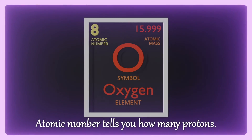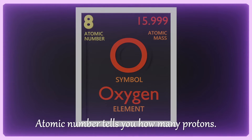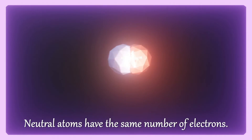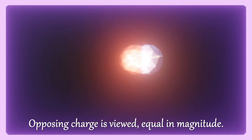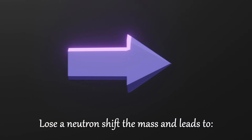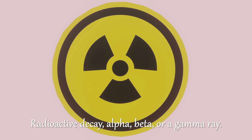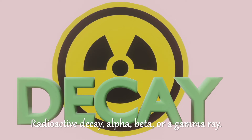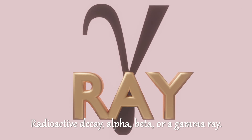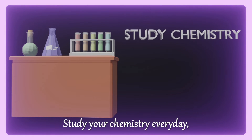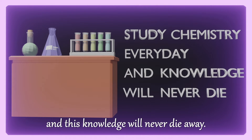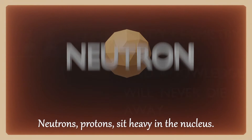The atomic number tells how many protons. Neutral atoms have the same number of electrons. Opposing charges due, growing magnitude. With a neutron shift the mass that leads to radioactive decay — alpha, beta, or gamma ray. Study your chemistry every day, this knowledge will never die away.